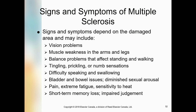The signs and symptoms of multiple sclerosis depend on the damaged area and may include: vision problems such as double vision; muscle weakness in the arms and legs causing difficulty in day-to-day function; balance problems affecting standing and walking; and tingling, pricking, or numb sensation — numbness meaning the area feels like it's dead with no sensation.